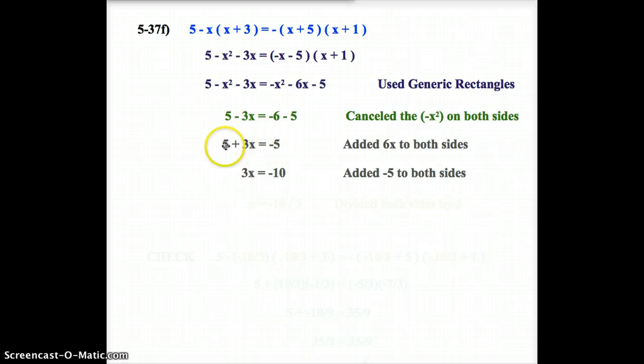The next step is take care of the positive 5 on the left side. So, I'm going to add the opposite or add negative 5 to both sides. So, the 5s cancel over here. My left side is left with 3x. My right side, negative 5 and negative 5 make negative 10.